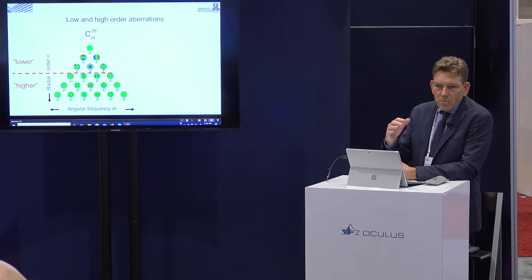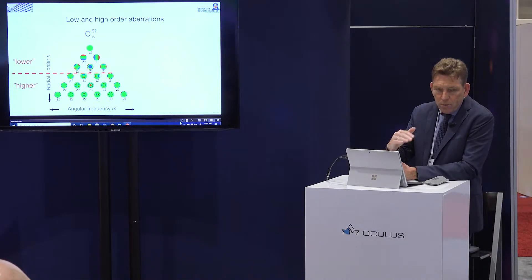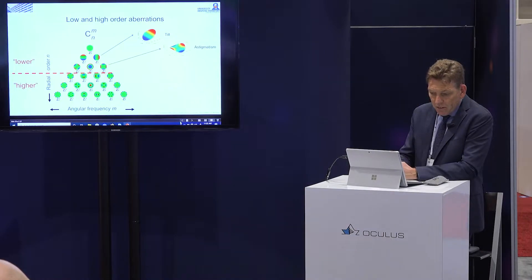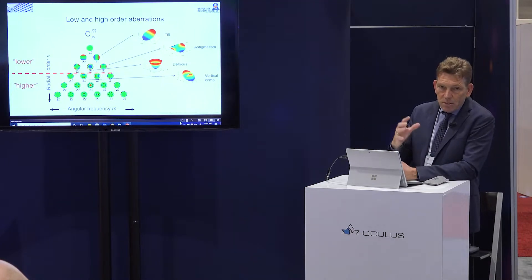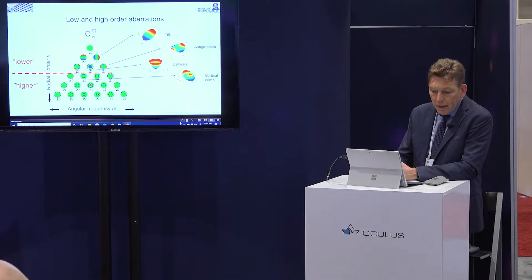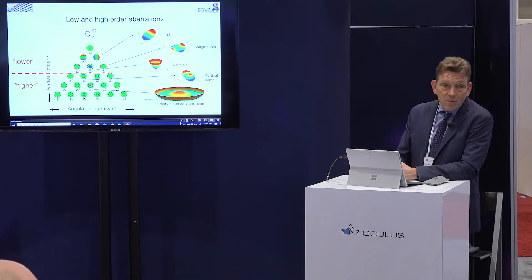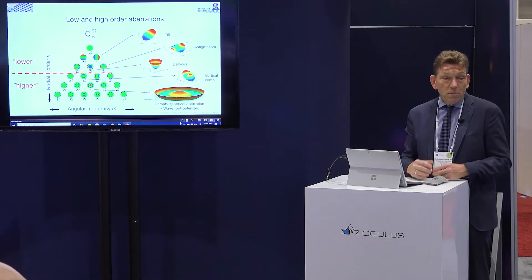I like to explain the Zernike pyramid quickly because some people look at it and never really understand it. You have lower order and higher order aberrations. At Z1 you have tilt — a system which tilts in the optical path. You have astigmatism on the right and left sides of the pyramid at level three. Then you have defocus — meaning minus or plus in your refraction. In the higher order aberrations, two major components are vertical coma in the middle and Z4, which is spherical aberration.